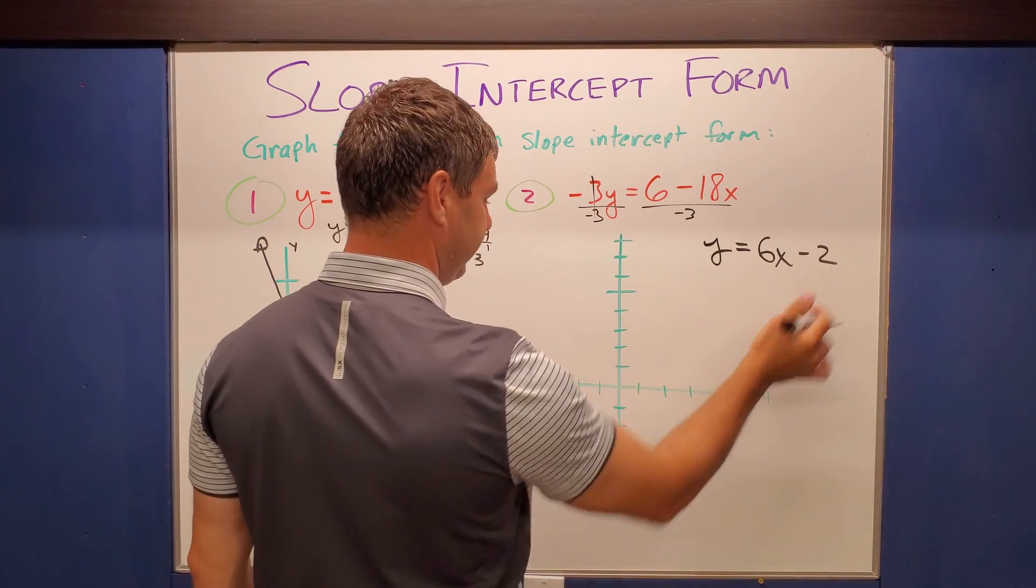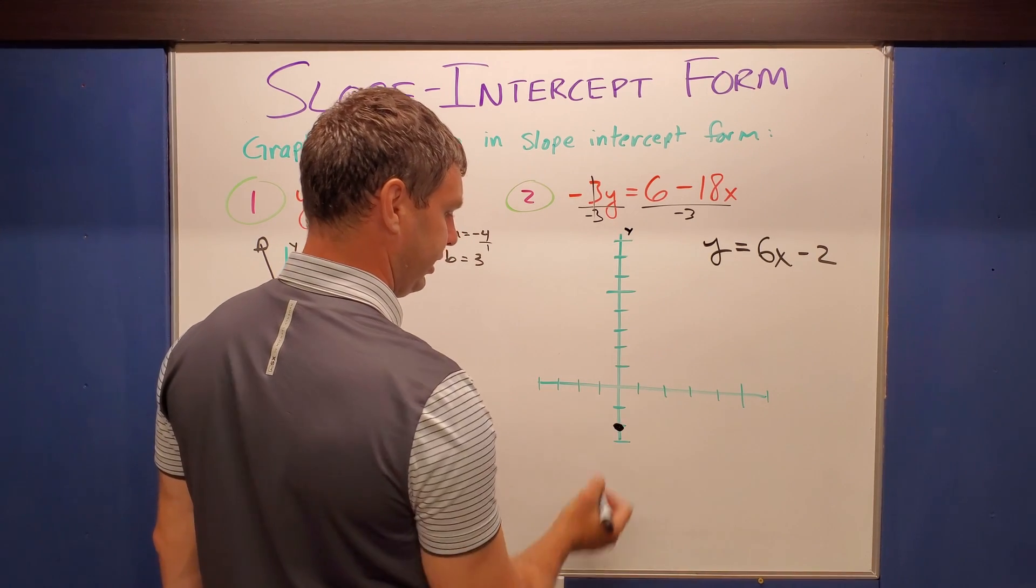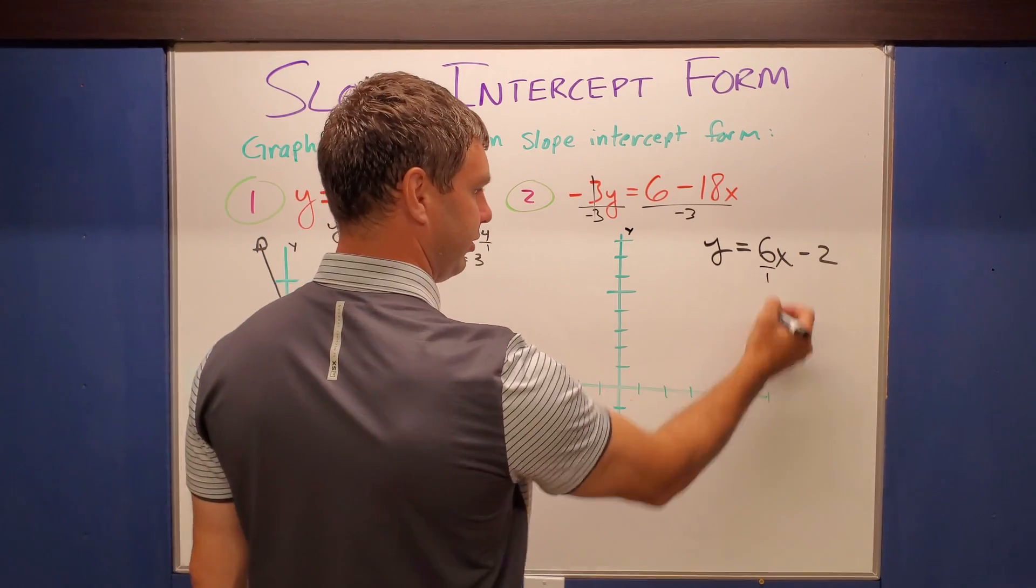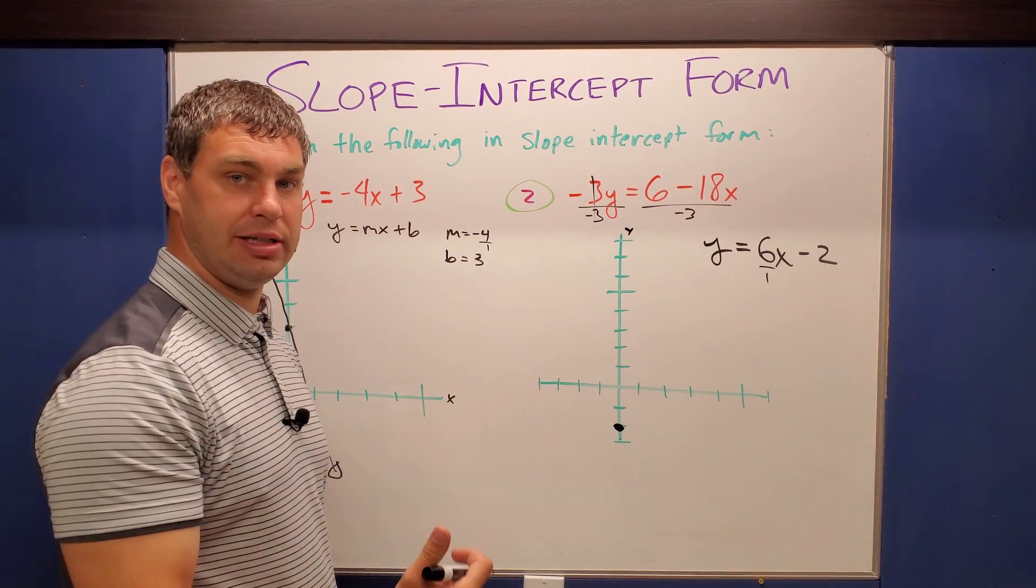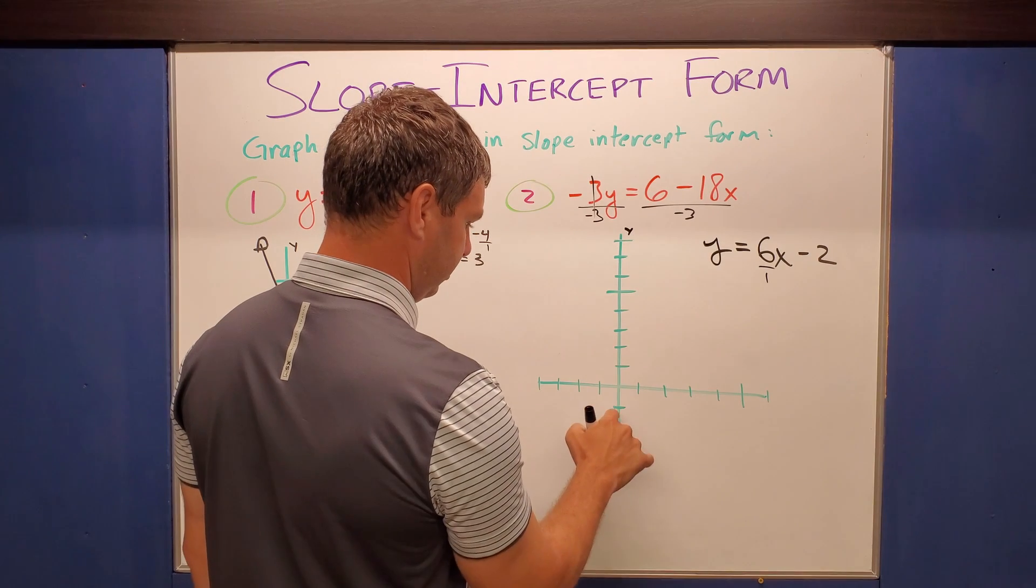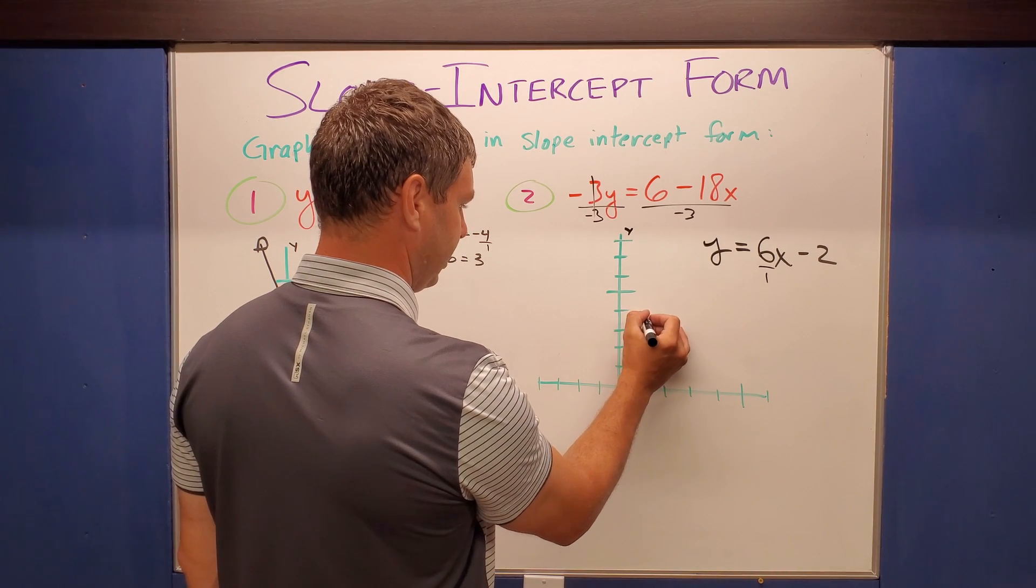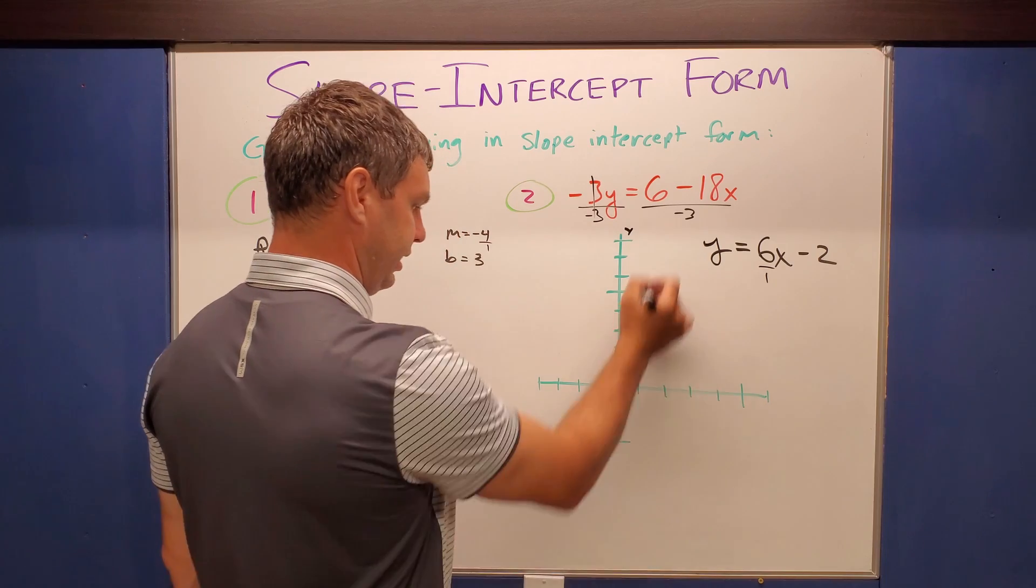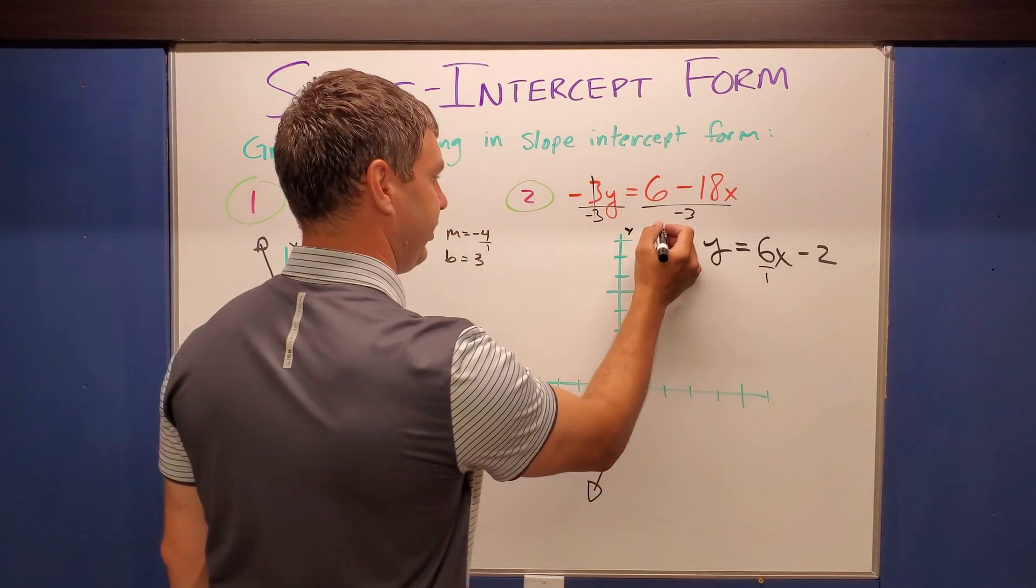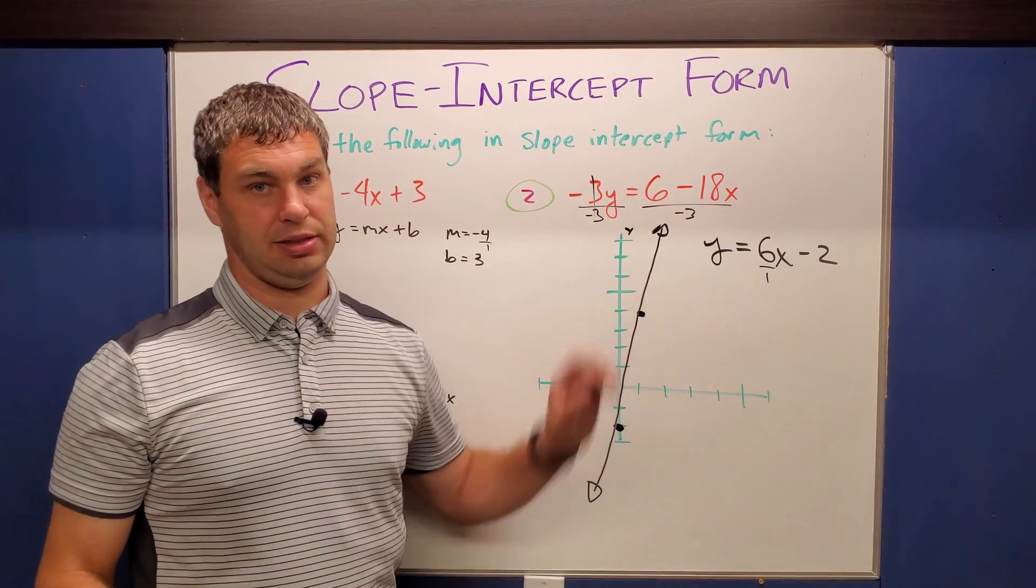It's a negative 2 here. So on the y-axis I'm gonna go down 2. Put a dot right there. And then now the slope says to go up 6 and over 1, right? I can again write that as rise over run as a fraction. So if I go up 6, 1, 2, 3, 4, 5, 6, and then over 1. It would be connecting these two dots. Do my best kind of freehand here. You'll have graph paper so it'll be better for you. But that'll be the graph that represents this equation.